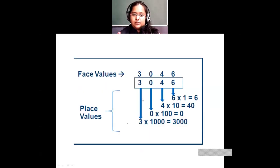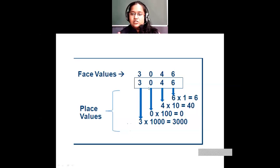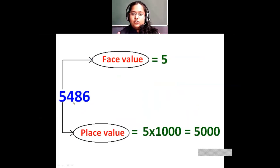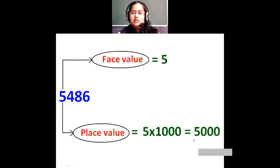One more example: 3,046. Face value of 3 is 3, face value of 0 is 0, face value of 4 is 4, face value of 6 is 6. Place value of 6 is 6 × 1 = 6; 4 is in tens place so 4 × 10 = 40; 0 in hundreds place so 0 × 100 = 0; and 3 in thousands place so 3 × 1,000 = 3,000. Face value of 5 in the thousands place would still be 5, but its place value would be 5,000.